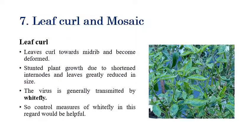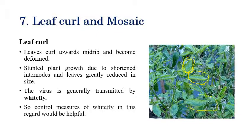The next disease is leaf curl and mosaic. For leaf curl, as the name indicates, inward curling of leaves can be seen from the midrib region, along with stunting of plants and shortening of internodes. The size of leaves is also reduced, and the size of internodes gets reduced; stunting of plants and reduction of plant height can be clearly observed.